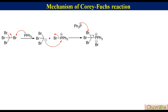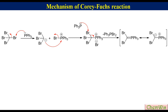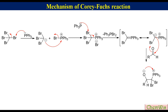A second molecule of triphenylphosphine attacks on bromine of the tribromomethyl group to generate the dibromomethyl triphenylphosphonium ylide. Therefore, the Corey-Fuchs reaction requires two equivalents of triphenylphosphine. This ylide attacks on the aldehyde to produce a betaine intermediate, which cyclizes to give a phosphetane intermediate.